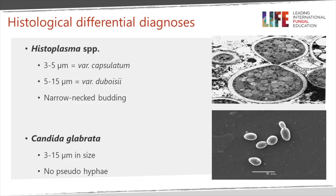The histological differential diagnoses include Histoplasma, which is usually smaller than cryptococcus at three to five microns across, though Histoplasma duboisii causing African histoplasmosis is quite a bit larger and has narrow-budding yeast cells. Candida glabrata is usually a small yeast but can be larger up to 15 microns, with no pseudohyphae seen, and pseudohyphae are very rare with cryptococcus.